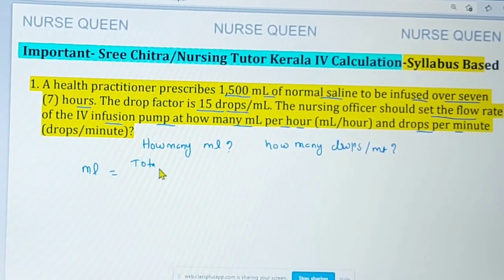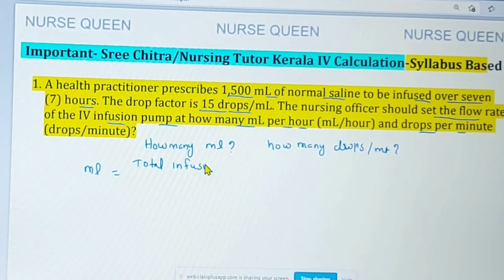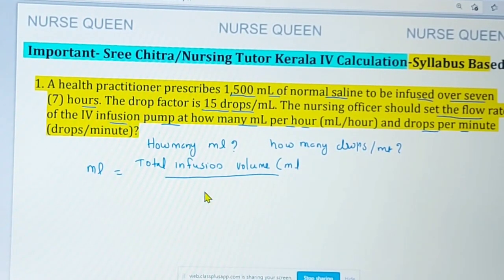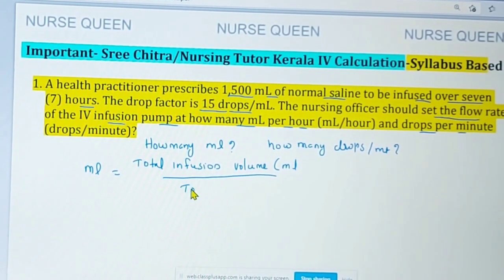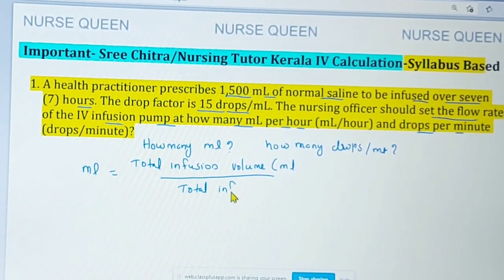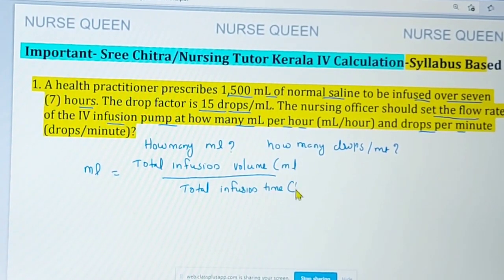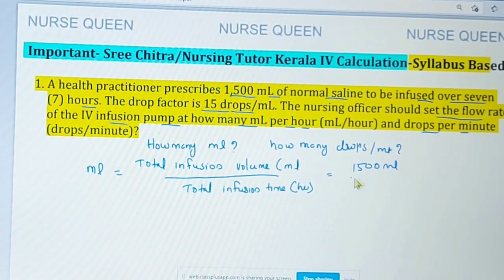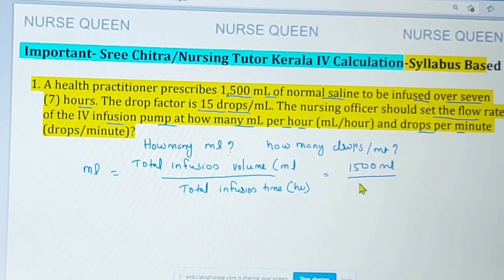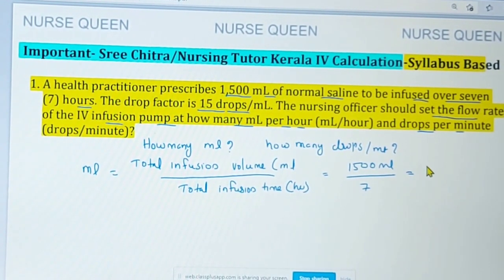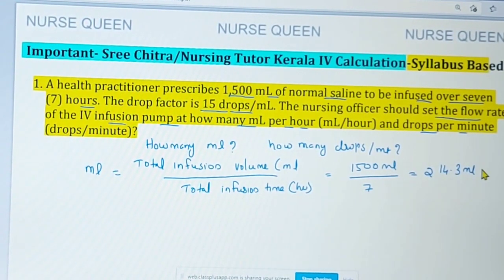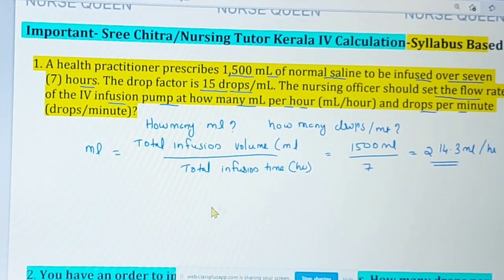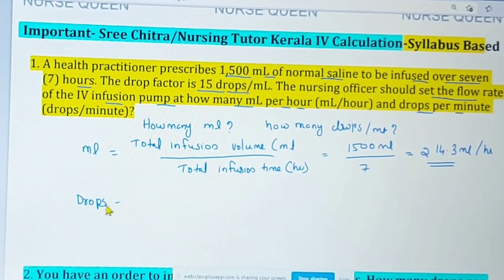To find ml per hour: total infusion volume in ml divided by total infusion time in hours. The infusion volume is 1500 ml and the infusion time is 7 hours.